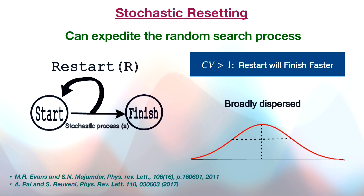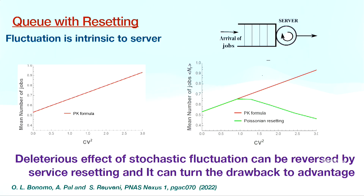Suppose you have a process which starts here and finishes here. Within some time, you cannot find the target, so you reset afresh, and there is a higher possibility of finding the target faster. It has been shown that if the coefficient of variation is greater than one, it is guaranteed that restart will help you finish the process faster. Now, what do we mean by a queue with resetting? Here I will talk about the case when the fluctuation is intrinsic to the server.